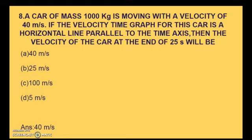Next question: a car of mass 1000 kg is moving with a velocity of 40 meter per second. If the velocity-time graph for this car is a horizontal line parallel to the time axis, then the velocity of the car at the end of 25 seconds will be — options are 40 m/s, 100 m/s, or 5 m/s. If the graph is a horizontal line parallel to the time axis, then the velocity is constant. So the answer is 40 meter per second.